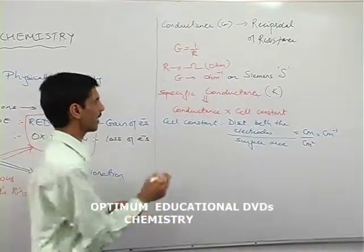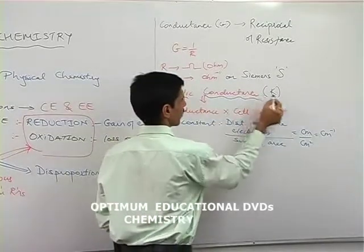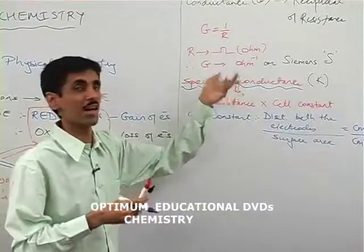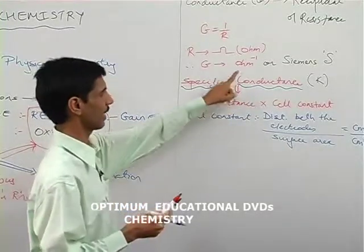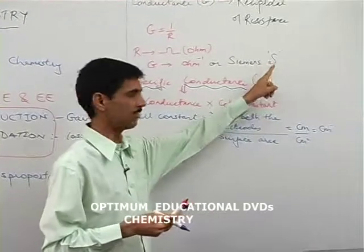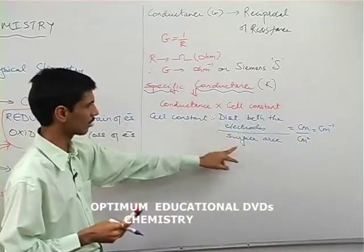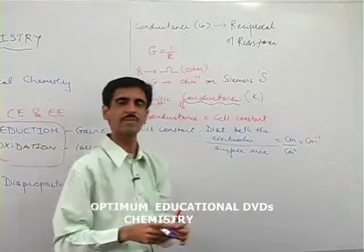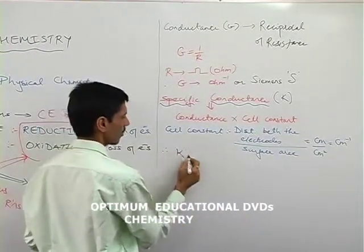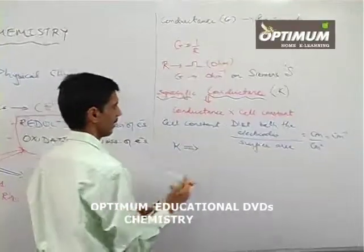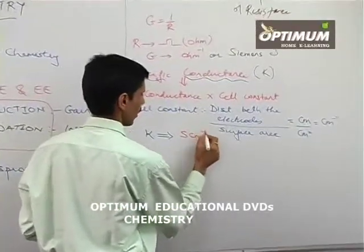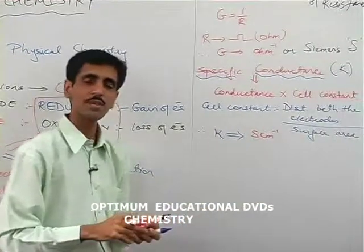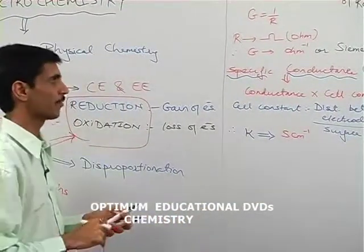So specific conductance K equals conductance multiplied by cell constant. Conductance is ohm inverse or Siemens, and cell constant is centimeter inverse. Therefore, the unit of K, the specific conductance, is Siemens per centimeter, written as S·cm⁻¹.